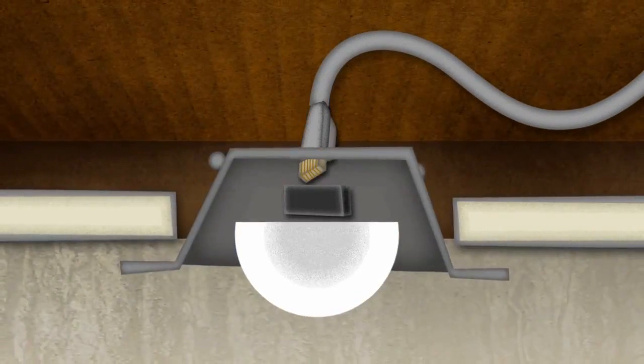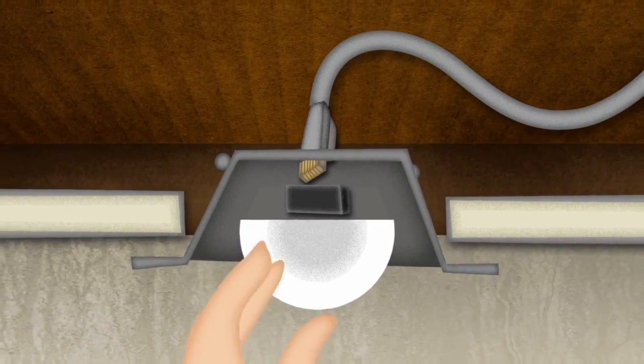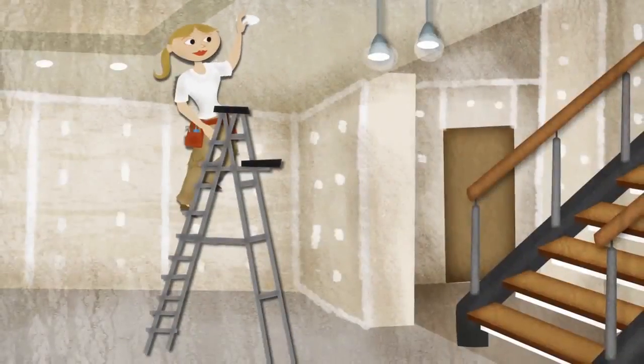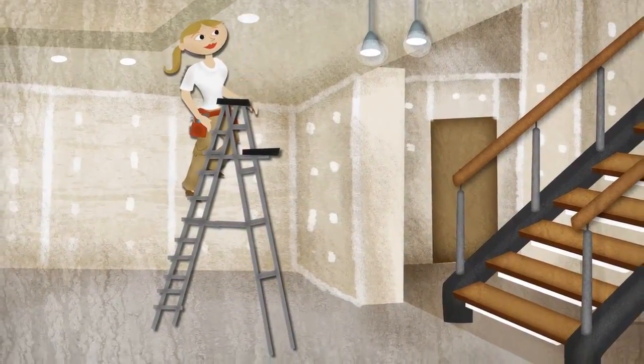And installing a light fixture is incredibly easy. Simply plug in the fixture, snap it into place, and plug the other end of the wire into a LumenCache module.